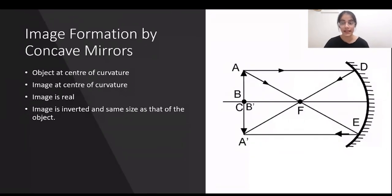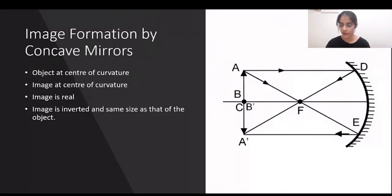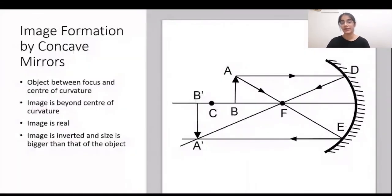Always draw these diagrams with a scale and pencil after marking all points — pole, focus, center of curvature, object points, and points of reflection — so the observations become easier to read. All three images seen so far were real images.